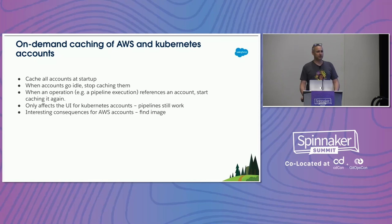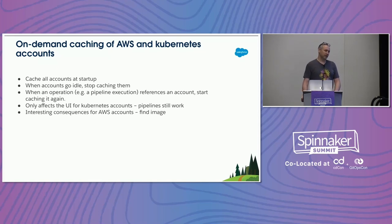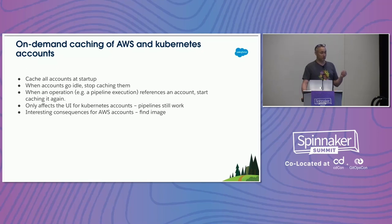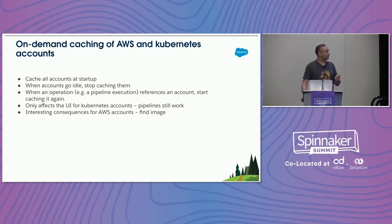Kubernetes pipeline stages used to depend on the cache to operate, but around version 1.23, live manifest mode became the default, and Kubernetes pipeline stages no longer depend on information in the cache. So if an account is idle and we don't cache it, it doesn't really matter — the pipeline would still work. The consequence is that you don't see information about that account in the infrastructure tab.